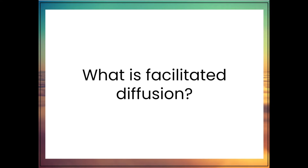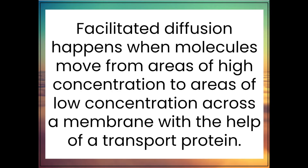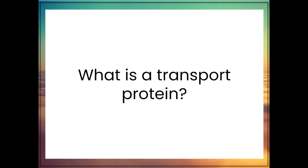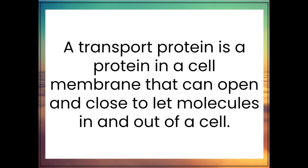What is facilitated diffusion? Facilitated diffusion happens when molecules move from areas of high concentration to areas of low concentration across a membrane with the help of a transport protein. What is a transport protein? A transport protein is a protein in a cell membrane that can open and close to let molecules in and out of a cell.